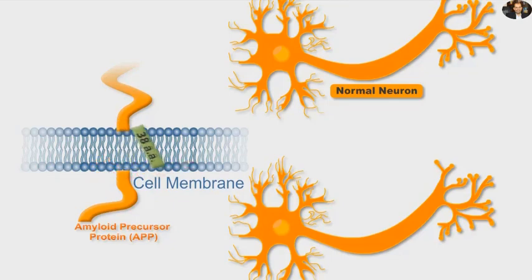This degradation process produces short fragments of a 38 amino acid long peptide. The resulting 38 peptides are easily metabolized and eliminated from the body without any harmful effect. Similar situations occur if the new fragments produced are 4 amino acids long.